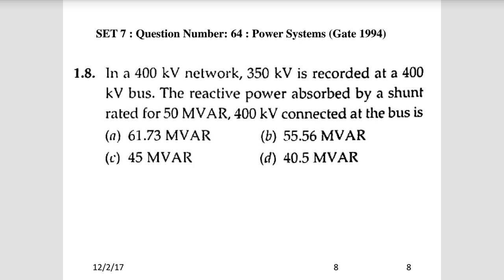Question 4: In a 400 KV network, 350 KV is recorded at the 400 KV bus. The reactive power absorbed by a shunt reactor rated 50 MVAr at 400 KV connected at the bus is to be found. Since the actual voltage is 350 KV instead of 400 KV, the reactive power absorbed will be less than the rated 50 MVAr. We can eliminate choices of 61.73 MVAr and 55.56 MVAr, keeping only options below 50 MVAr.